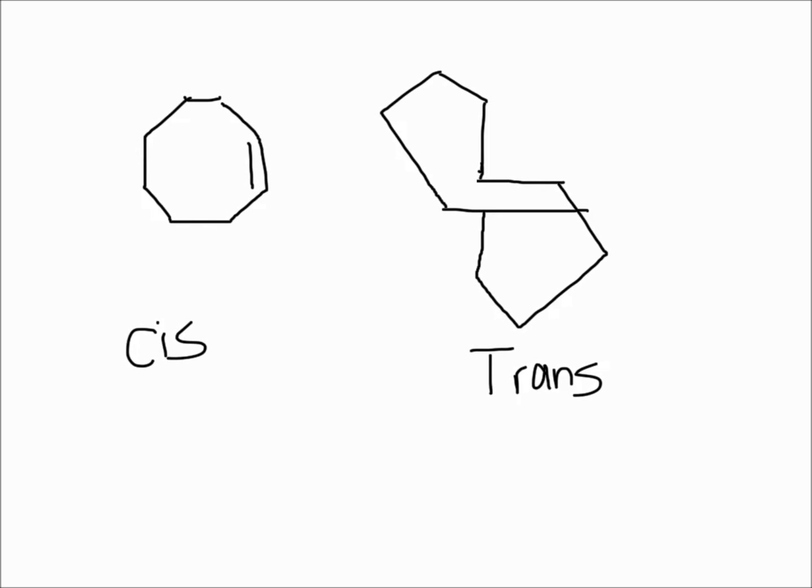Here I've drawn an eight membered ring. This would be an eight member ring that's a cis double bond, and on the right would be an eight member ring that has a trans double bond. Very large rings can have a trans double bond and it will be stable and form.